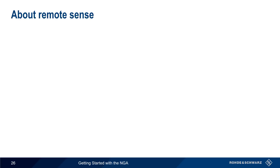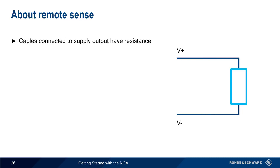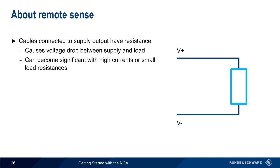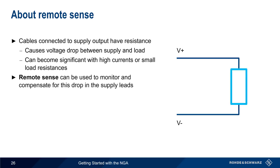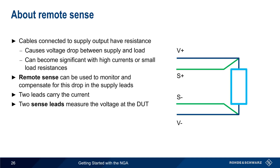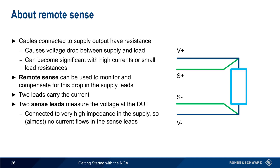The next topic is remote sense. The cables connected to a power supply's outputs have resistance, and this will cause a voltage drop between the power supply and the load. In many cases this very small drop can be ignored, but it can become significant with high currents or small load resistances. Remote sense is a method used to monitor and compensate for the voltage drop in the supply leads. In remote sense, two leads carry the current as normal, but two additional leads called sense leads are used to measure the voltage at the load. Because these sense leads are connected to a very high impedance in the supply, there's almost no current flow in these leads and therefore almost no voltage drop. Based on the readings made using these sense leads, the supply can adjust the output to obtain the desired voltage at the load.